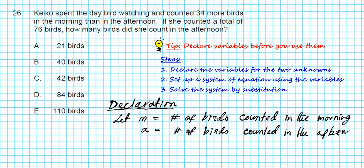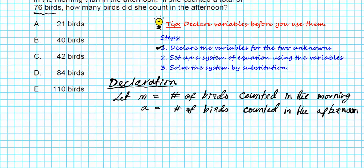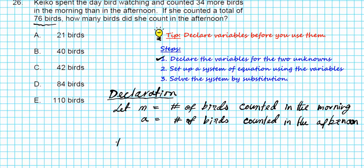Now that we have declared our variables, we can advance to step two where we will start setting up a system of equations. The first equation we know has to do with the total number of birds. There are a total of 76 birds. So total number of birds is equal to number of birds in the morning plus the number of birds in the afternoon.